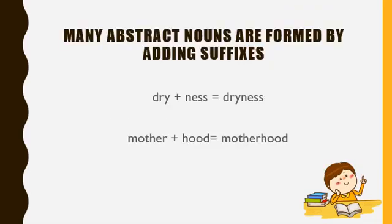There are many abstract nouns that are formed by adding suffixes. For example, dry is a word and we add -ness, which is a suffix. So when we add these two together, it becomes dryness. So dryness is an abstract noun.